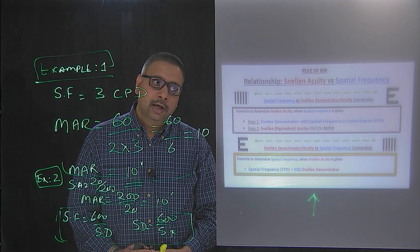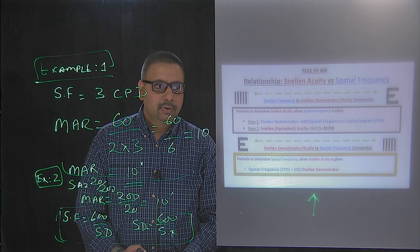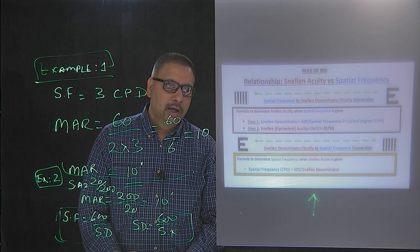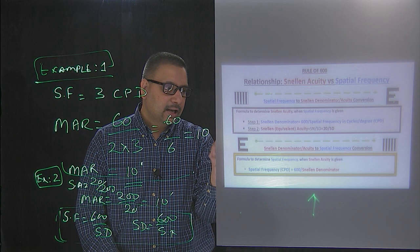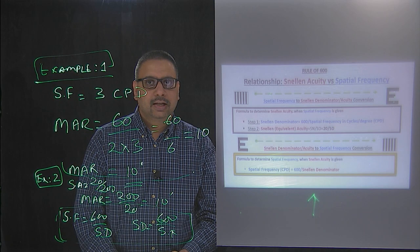This is the rule of 600 which you should be familiar with. If you are given spatial frequency, you can convert that into Snellen acuity. Step one is to get the Snellen denominator: that's 600 divided by whatever spatial frequency you have in cycles per degree. Snellen acuity is Snellen numerator (20 feet) divided by Snellen denominator. You can also convert a Snellen acuity into spatial frequency using the same formula: spatial frequency = 600 divided by Snellen denominator.